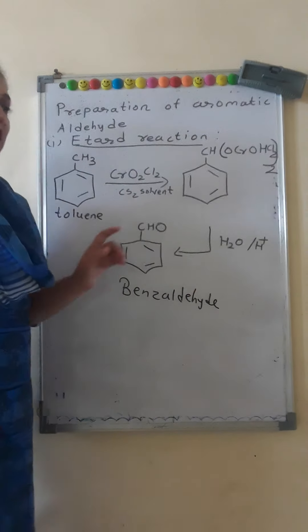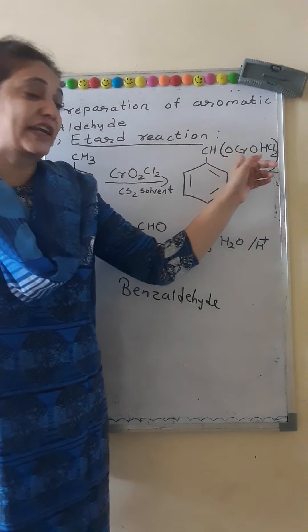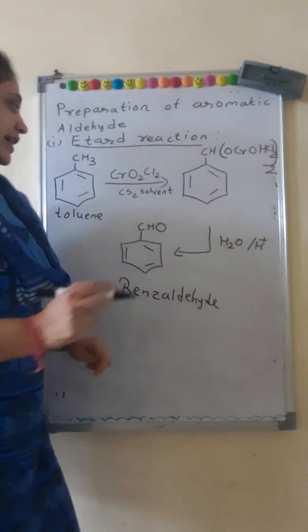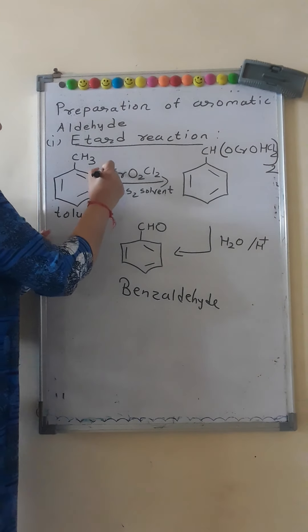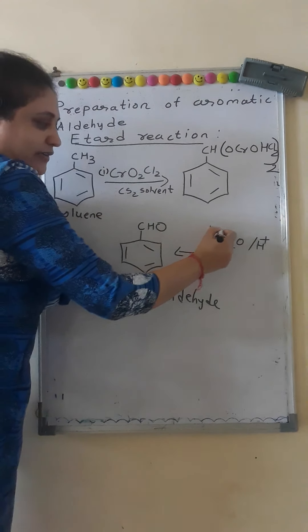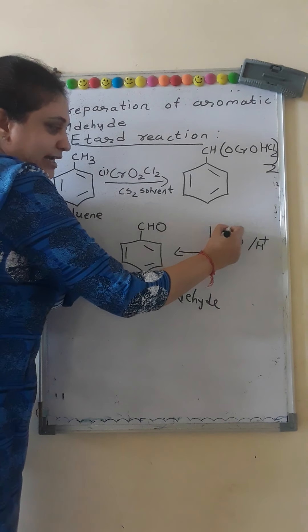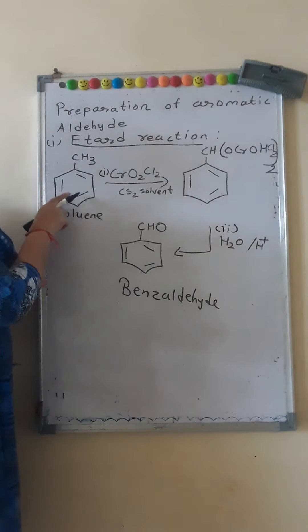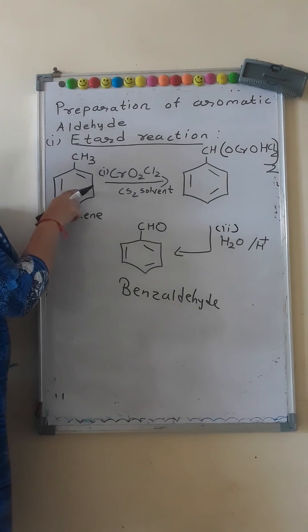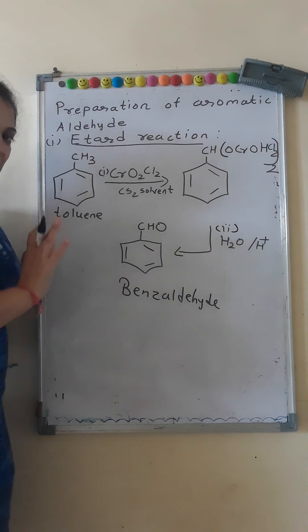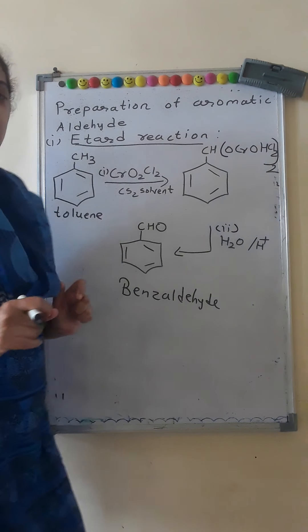In case you forget how to write the adduct, you can write the first reagent and the second reagent separately and directly show that toluene gets converted to benzaldehyde.